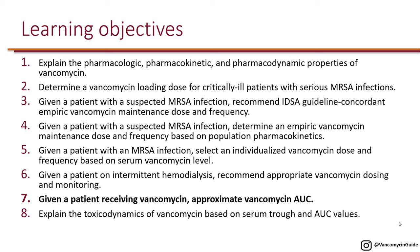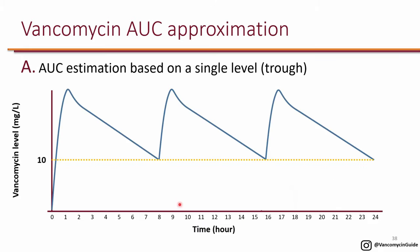The next learning objective is: given a patient receiving vancomycin, approximate the vancomycin AUC. Remember that AUC is for a 24-hour period of time. In this example we're showing Q8 dosing of vancomycin. On the horizontal axis you have time from 0 to 24, and on the vertical axis we have vancomycin concentration in the blood. If you give vancomycin three times a day, you get a peak three times, and the area under all of these is the AUC for the 24-hour period.